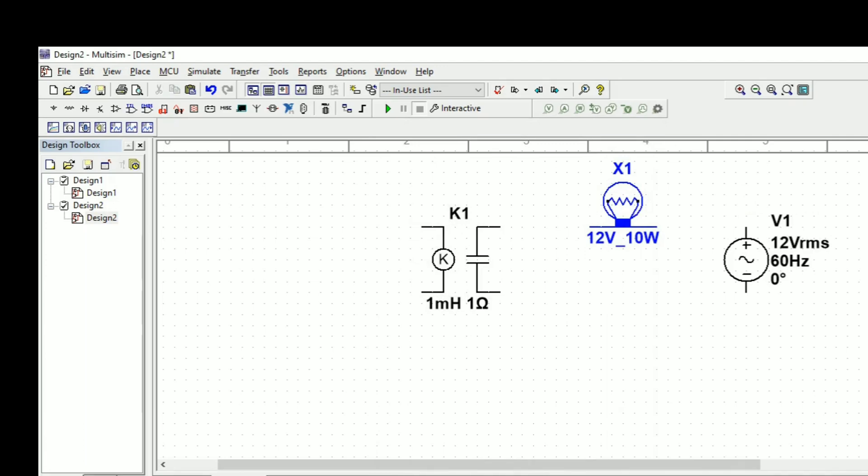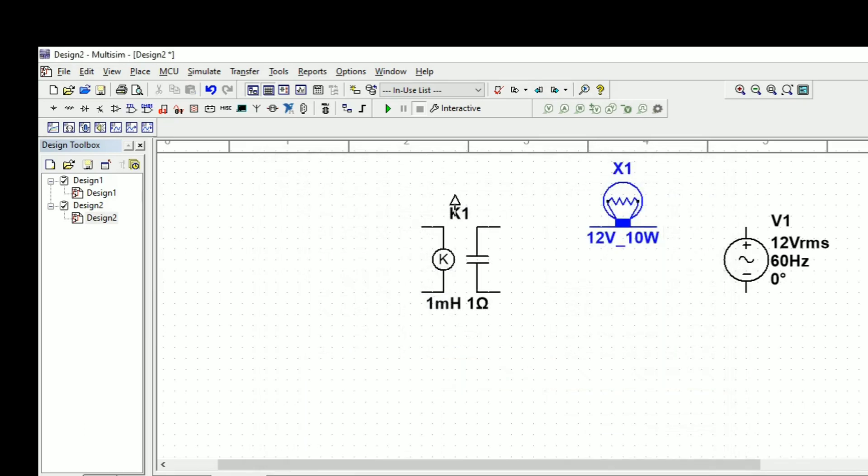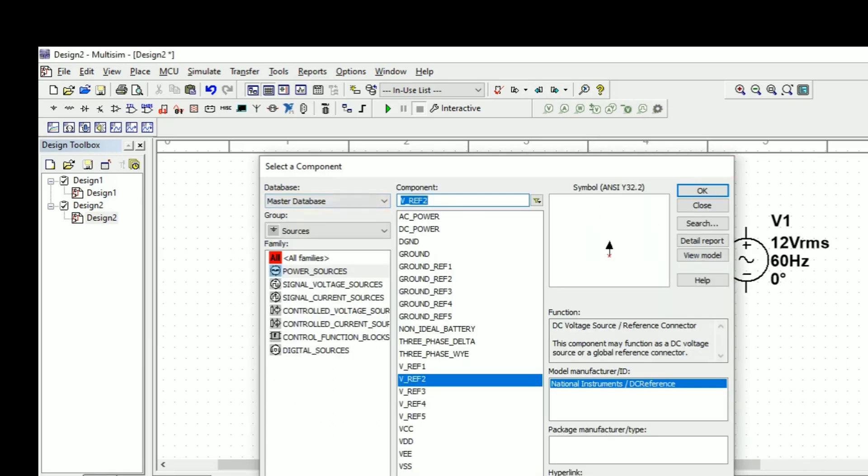This is the output side of the relay. Now we need to take the input side. To operate this relay we need to give the supply voltage. That supply voltage we will take the reference voltage.